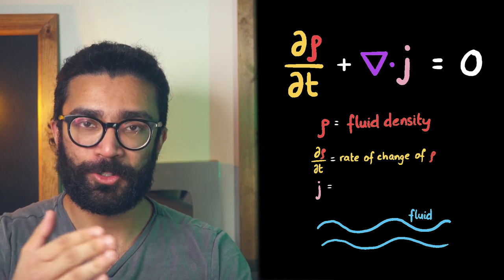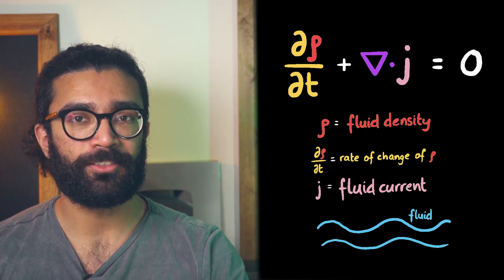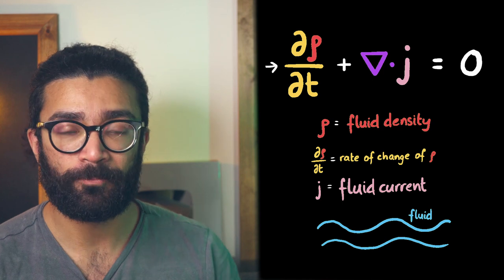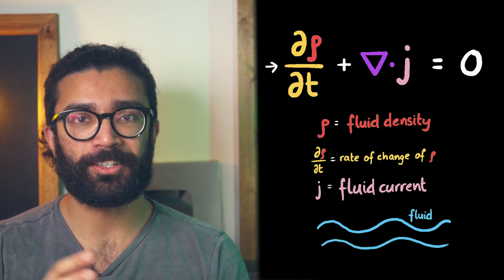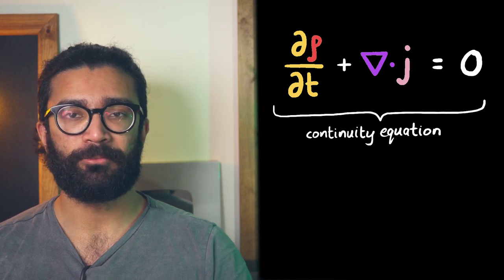If rho was used to represent fluid density rather than probability density, and j was fluid current rather than probability current, then the equation that would be used to describe how the fluid flows is exactly this one. It's quite famous and is known as the continuity equation.